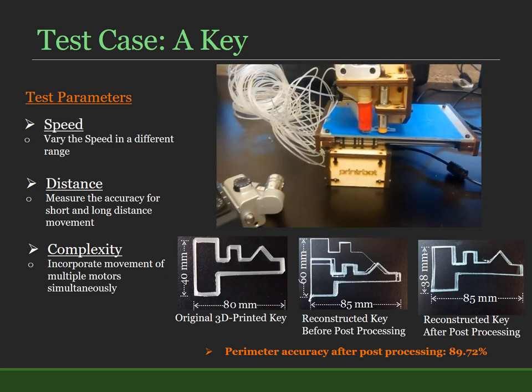As a test case to combine different test parameters, we have printed an outline of a key. For this object, the perimeter accuracy obtained after post-processing is 89.72%.